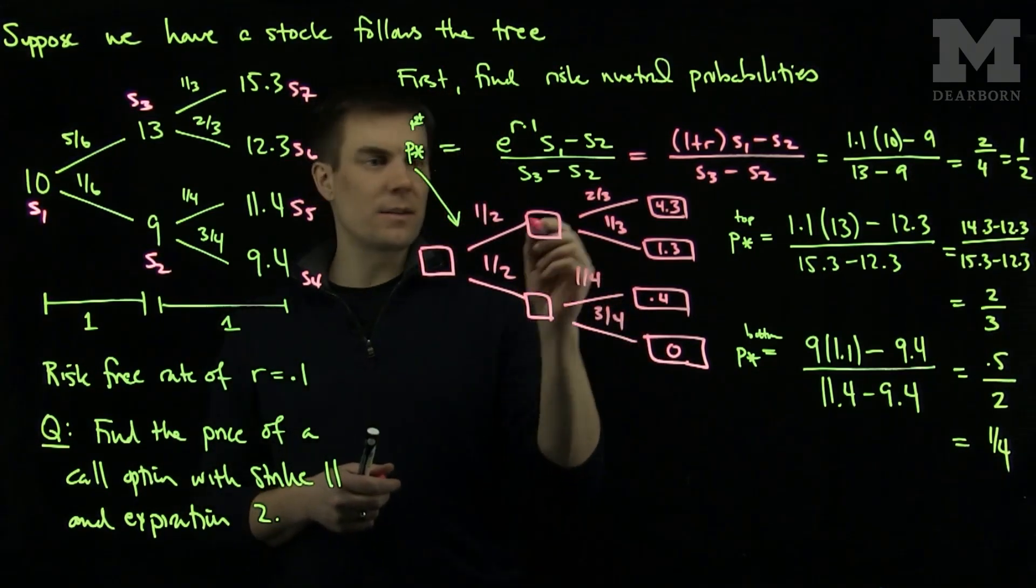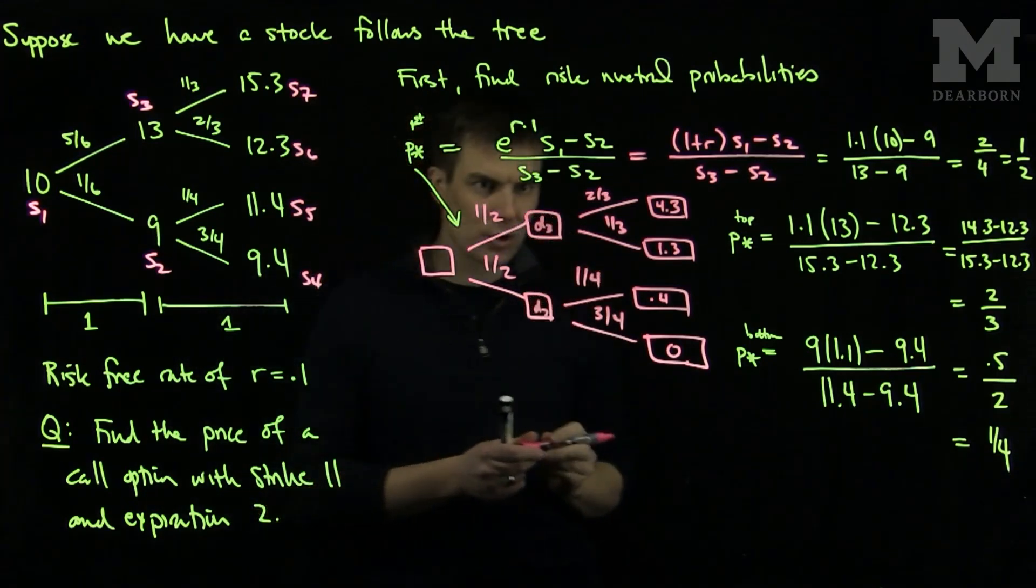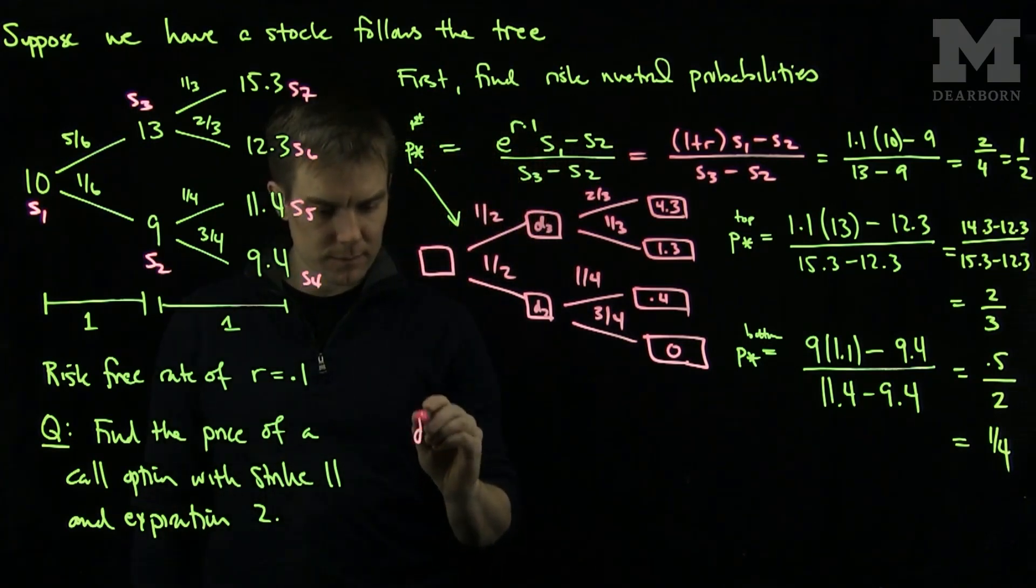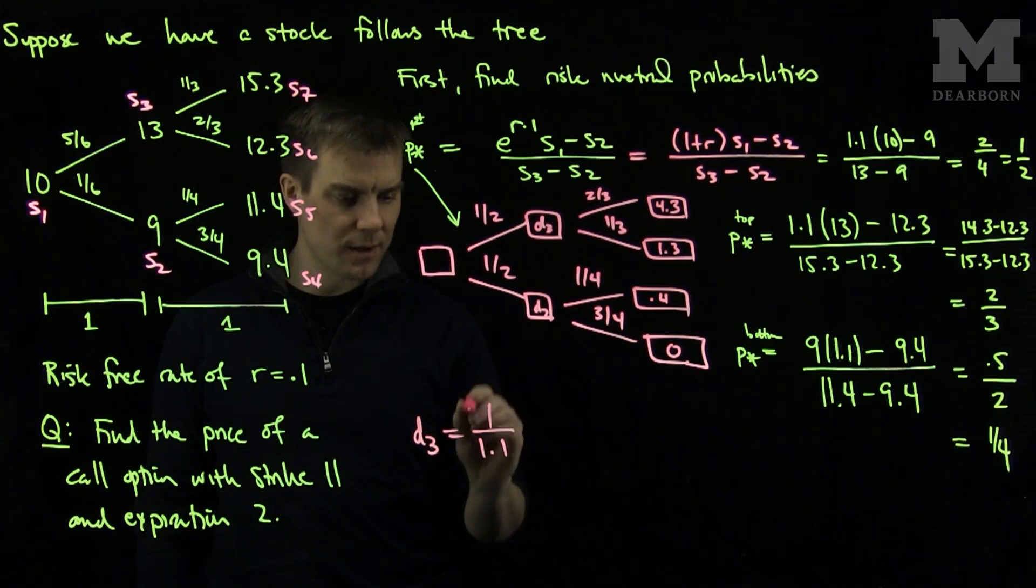And now if I wanted to find the derivative d3 and d2, we can use this tree structure. So d3 will be 1 over 1.1, the discount factor,